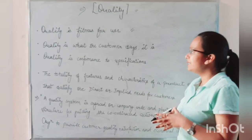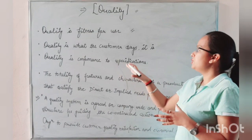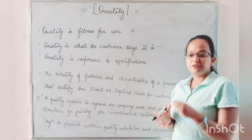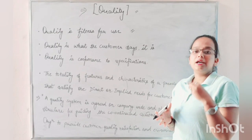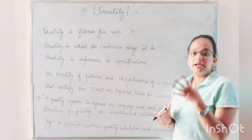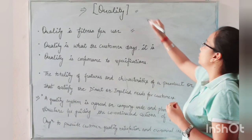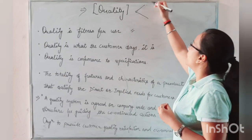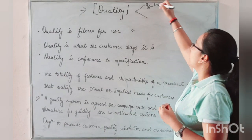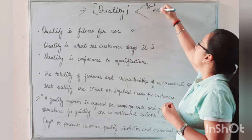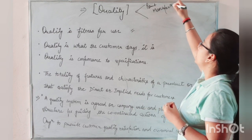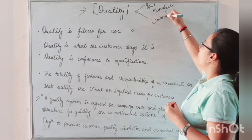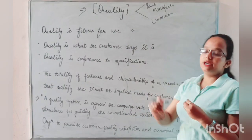Next is: quality is conforming to the specification. It means that whatever specification you give, the customer receives it. When we talk about quality, there are two ways to understand it — the point of view of the manufacturer, and the point of view of the customer.